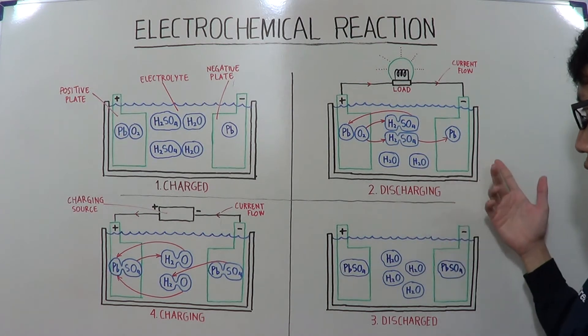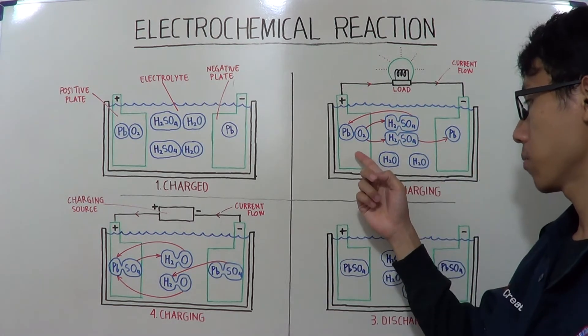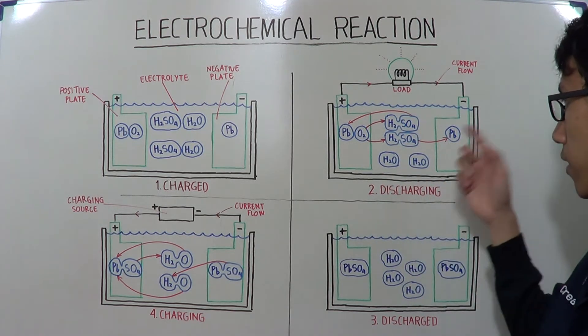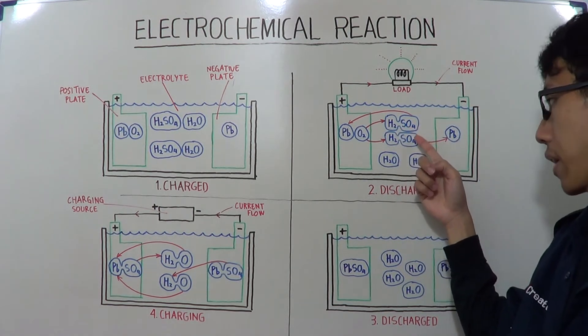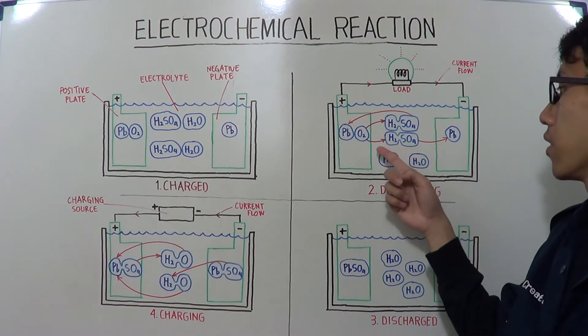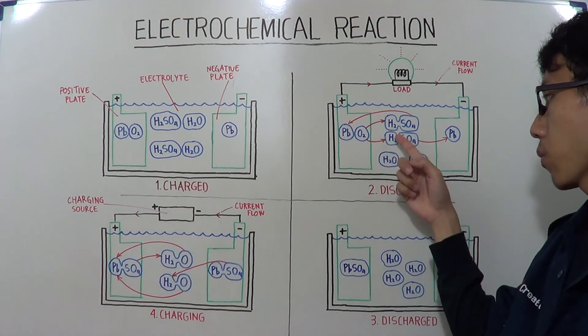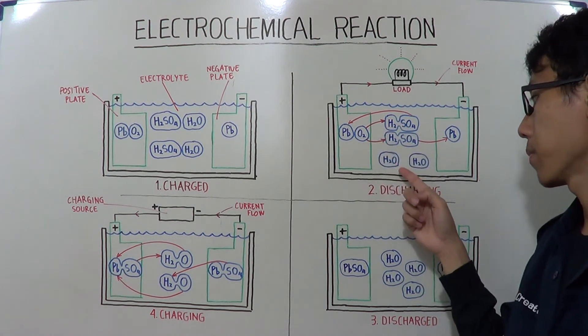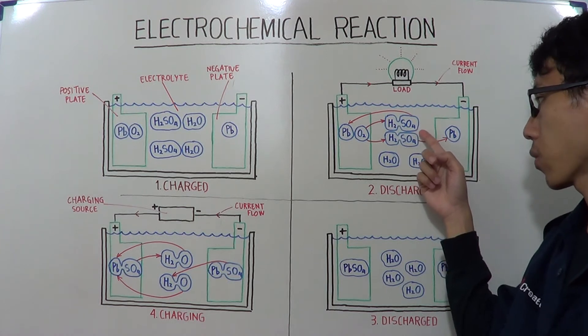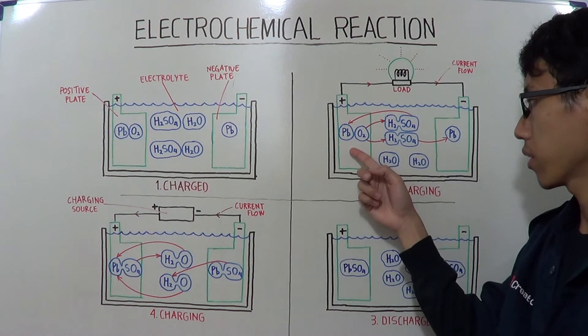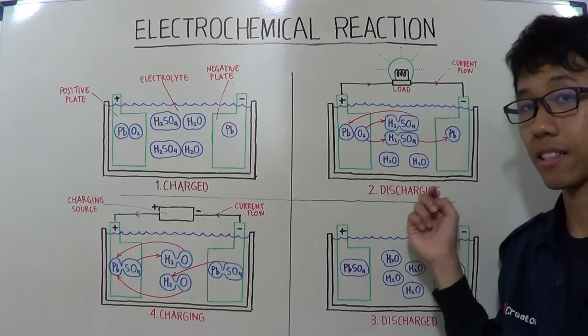As the battery is discharging, the electrolyte becomes diluted and the plates become sulfated. The electrolyte divides into hydrogen or H2 and sulfate or SO4. And the oxygen from the positive plate combines with the hydrogen to form water or H2O. And the sulfate or SO4 combines with lead or PB on both positive and negative plates. That's the second stage.